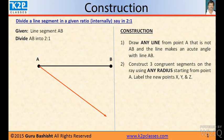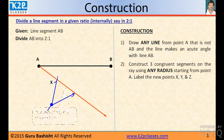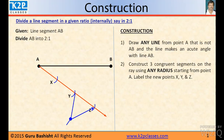Then construct 3 congruent segments on the ray using any radius. Starting from point A, label the new points X, Y, Z. You can use any suitable radius. Then after making the first cut, make the second one. Remember, keep the same radius.